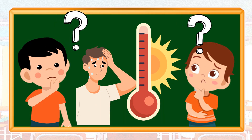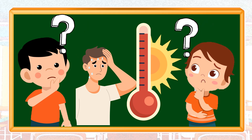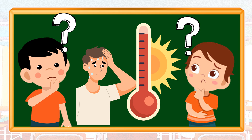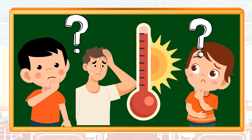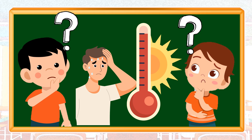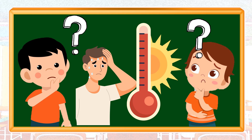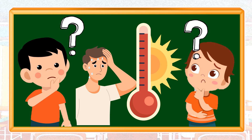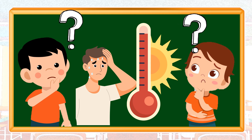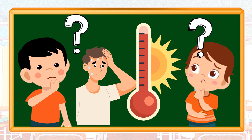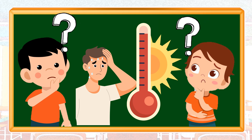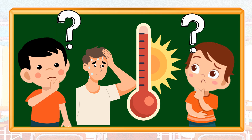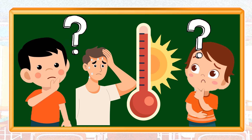During summertime, our country experienced high temperature. Some classes were suspended due to the high heat index. There are also an increase in the number of people suffering from heat stroke. Animals also experienced the same condition during this time. Crops and farmers suffered due to lack of water brought by the intense heat. But what is heat? How does heat change a certain material or situation? Let's find out.